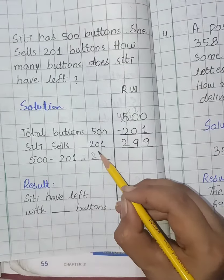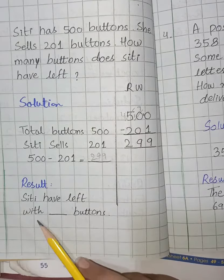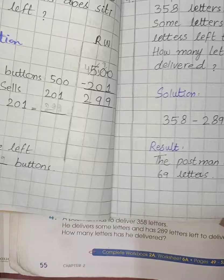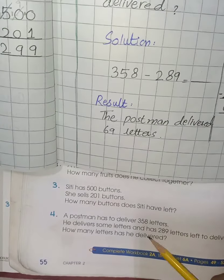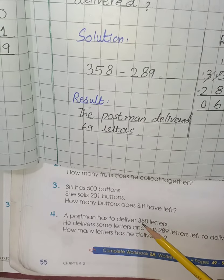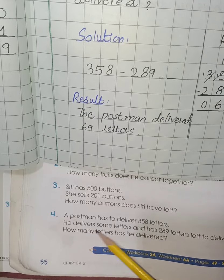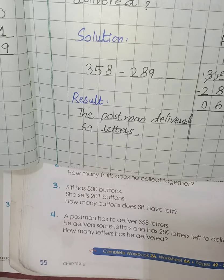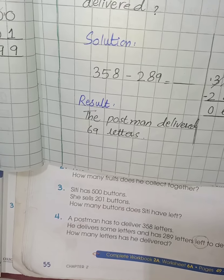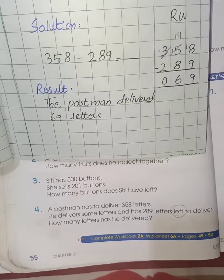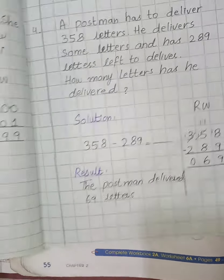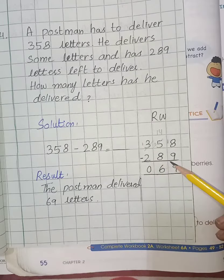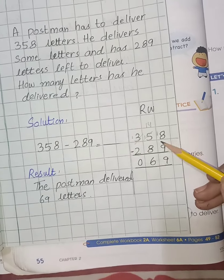The next and last word problem: a postman has to deliver 358 letters; he delivers some letters and has 289 letters left to deliver. The keyword 'left' means this is a subtraction problem. How many letters has he delivered? So 358 minus 289. 8 minus 9 cannot be subtracted, so we take a borrow from the neighbor.